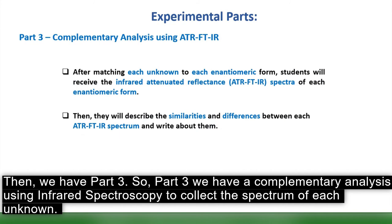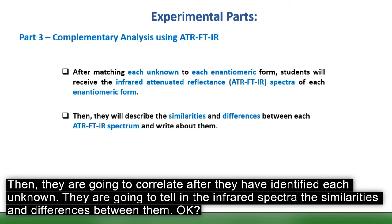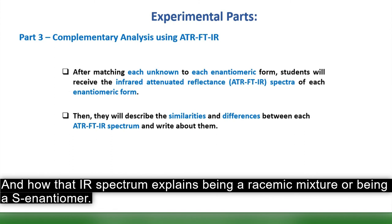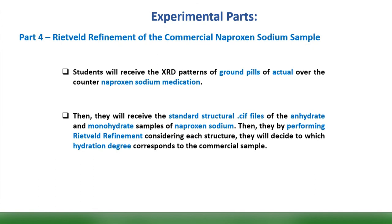Part 3 is a complementary analysis using infrared spectroscopy. Students will use IR spectroscopy to collect the spectrum of each unknown, then — after identifying each unknown — they will discuss the similarities and differences between the IR spectra and explain how the spectrum is consistent with being a racemic mixture or an S-enantiomer.